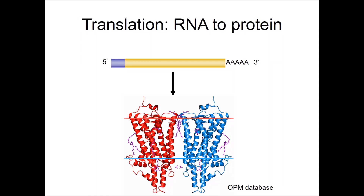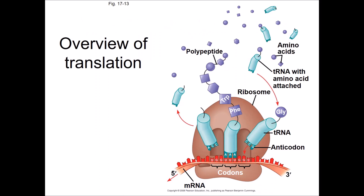This is a continuation of the chapter on gene to protein, and in this part I'm going to cover translation. An mRNA molecule is shown here at the top with its protein coding region in yellow. The five prime cap, a single backwards G nucleotide, is in purple, and the poly A tail is at the three prime end. The yellow portion codes for a complex transmembrane protein shown at the bottom. The process of translation reads the mRNA code to translate it into an amino acid sequence. In translation, the ribosome processes an mRNA molecule in the same direction the mRNA molecule was made, five prime to three prime.